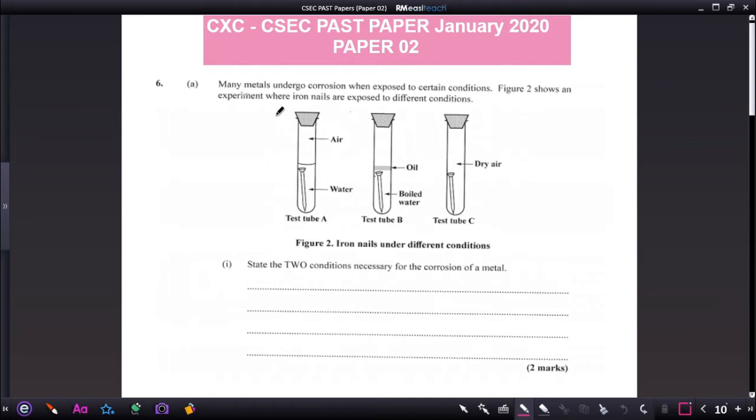Many metals undergo corrosion when exposed to certain conditions. Figure 2 shows an experiment where iron nails are exposed to different conditions. So we have three test tubes. In test tube A, the nail is in water and air. In test tube B, it is in boiled water. However, oil is at the top of it and in test tube C, there is no water and the nail is in dry air. So let us look at the questions.